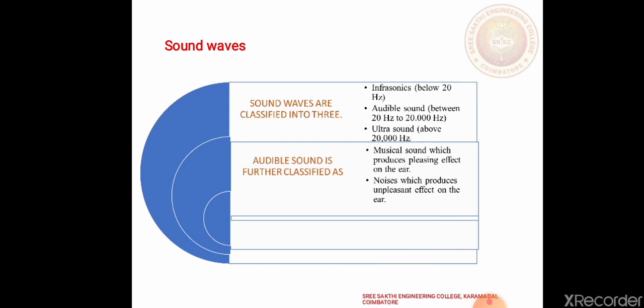Ultrasonics: Sound waves of frequencies above 20,000 Hz are called ultrasonics. They are also not audible to the human ear. Audible sound is further classified into musical sound and noise.